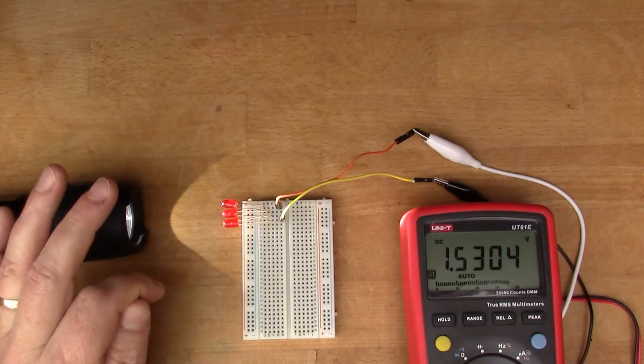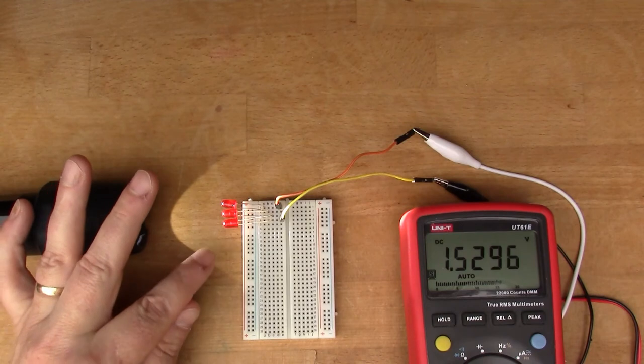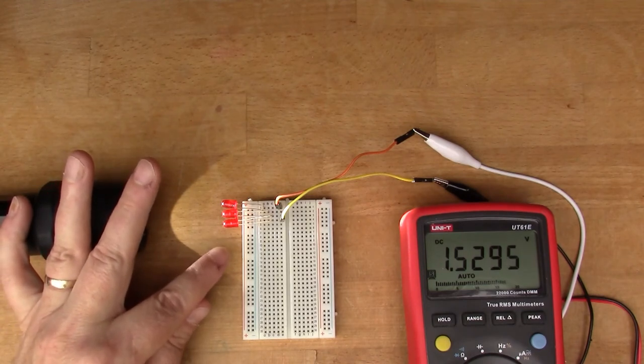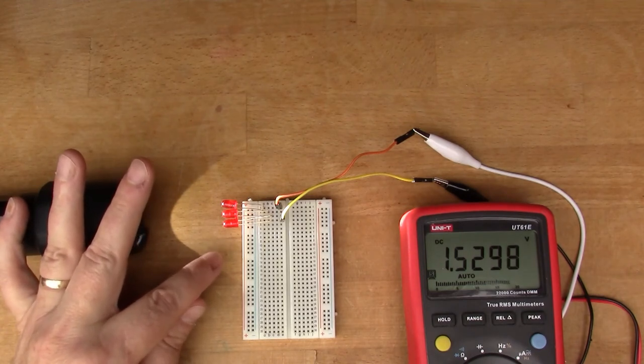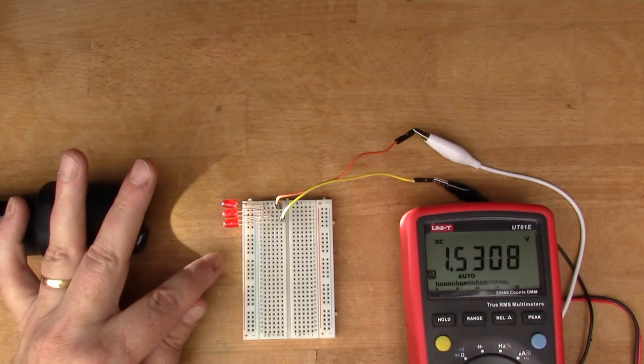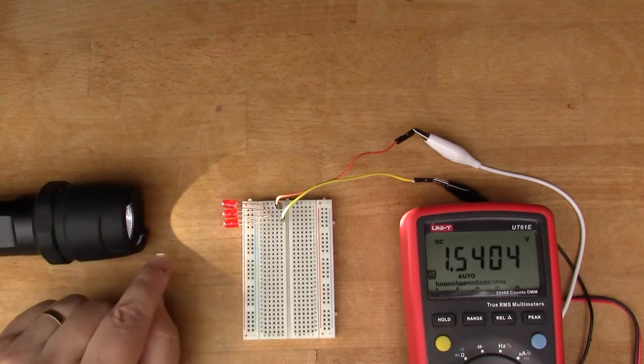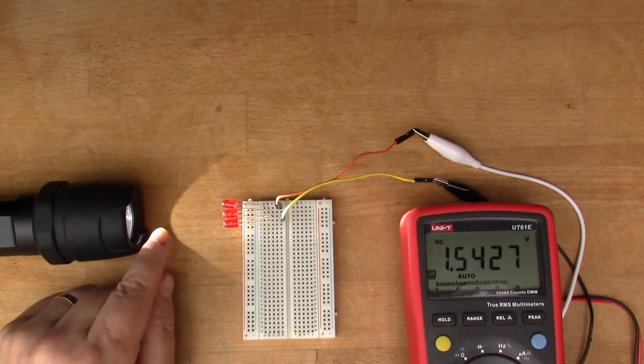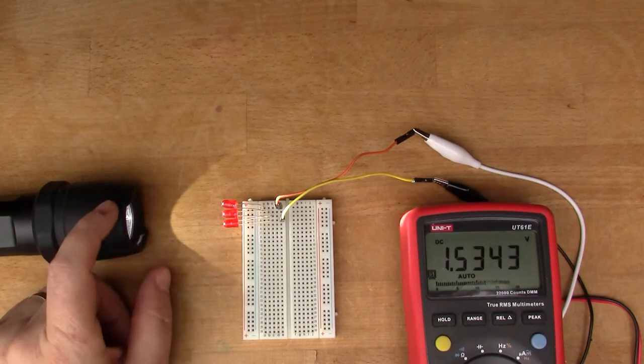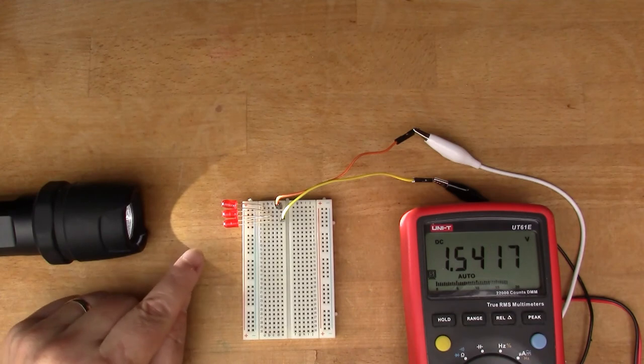So the other question was how much current is this generating. In fact I did put the meter on it yesterday but couldn't read any current at all, but I'm thinking this is much brighter than what I was using as a light source before. I was using one single LED, so I think we might be able to measure something now with this.